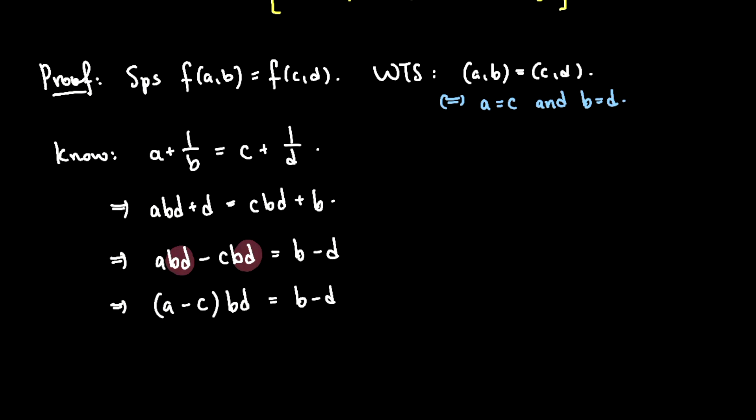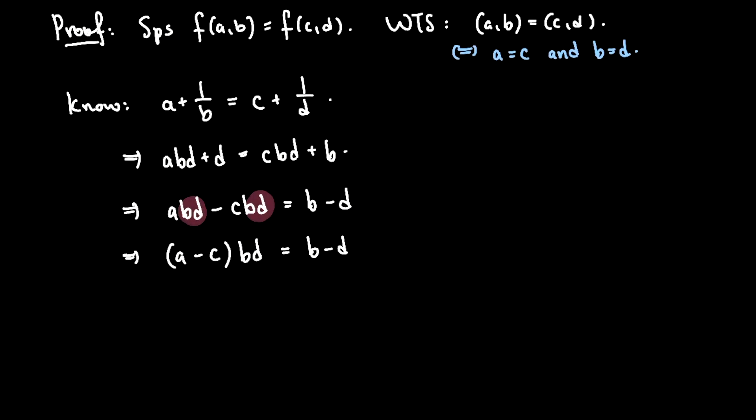And now all I can do is stare at this equation and think, why does this imply that a equals c and b equals d? Well, there's a couple different ways to view it. One way is to bring this to the right side and the d over to the other side. So I get d equals b minus a minus c times bd. And I can factor out the b. So I have b times 1 minus a minus c times d. And the whole point here is I see that b times some integer is d. So this tells me that some multiple of b is equal to d, which of course is the same as saying that b divides d.